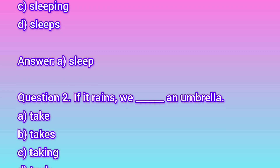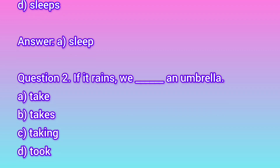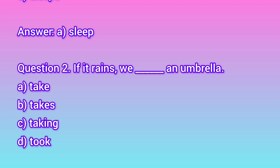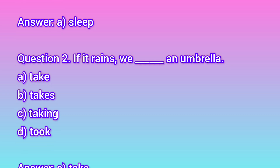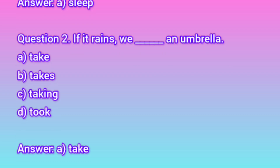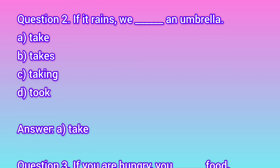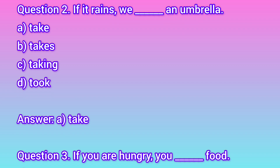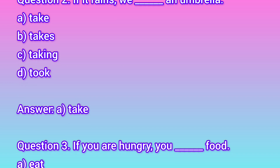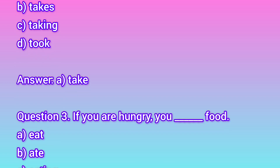Question 2. If it rains, ___ an umbrella. A. Take. B. Takes. C. Taking. D. Took. Answer A: Take.